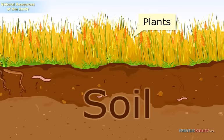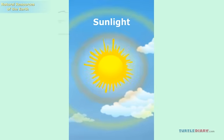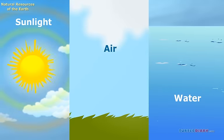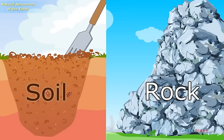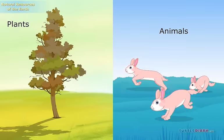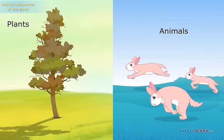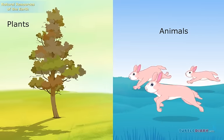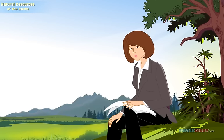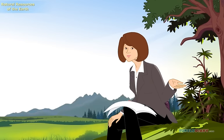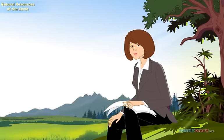Some natural resources are sunlight, air, and water. Soil and rocks. Plants and animals. Coal and oil. Natural resources are found all over the Earth. Some are found under the Earth's surface.